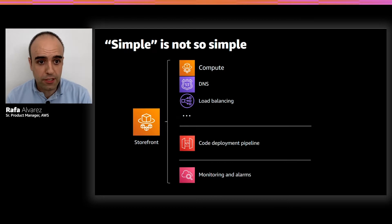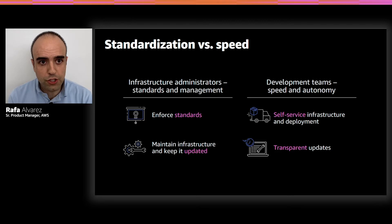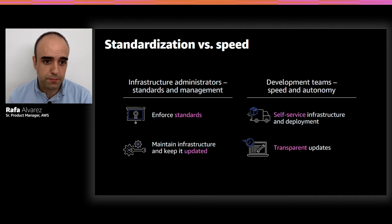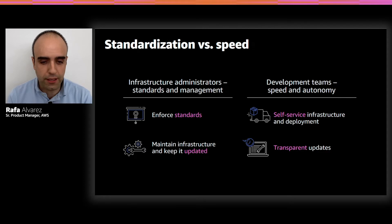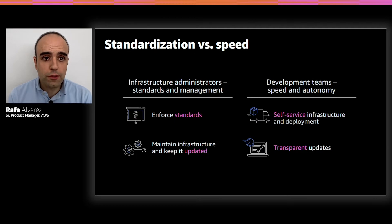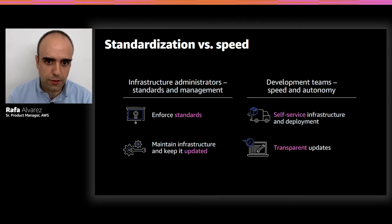So what was a simple infrastructure is not that simple anymore. There are lots of moving pieces here to be responsible for, and a tension arises between the infrastructure team — whose job is to make sure that all of those components meet our standards — and the development team. The infrastructure team is looking to standardize, to ensure compliance and cost requirements are met. They also want to keep things updated as standards change, new technology arises, and needs evolve.